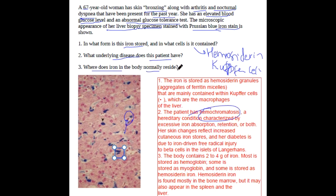Where does iron normally reside in our body? Iron normally resides in our body as hemoglobin and myoglobin. Whenever there is excess iron present, it is stored as hemosiderin. Thank you for watching.